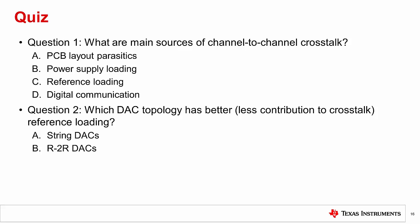Alright, now let's take a short quiz to check our knowledge of channel-to-channel crosstalk. Question 1: What are the main sources of channel-to-channel crosstalk? A. PCB layout parasitics, B. Power supply loading, C. Reference loading, D. Digital communication. Digital communication does not cause channel-to-channel crosstalk, but it may cause digital feed-through. All other answers are valid sources of channel-to-channel crosstalk.